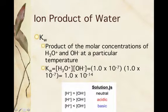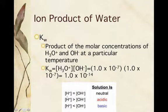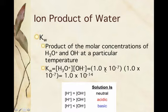The ion product of water is KW. Whenever you see KW, that's just the ion product of water — the product of hydronium and hydroxide concentrations. H⁺ and H₃O⁺ are interchangeable and mean the same thing. From the self-ionization of water, hydronium and hydroxide concentrations are equal at 1 times 10 to the negative 7th. Multiplying those two together gives 1 times 10 to the negative 14th, so KW always equals 1 times 10 to the negative 14th.